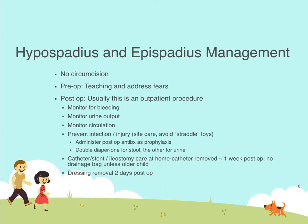Tell parents to avoid putting these children on any toy where they have to straddle — a horse, a bike, a scooter, that type of thing. Catheter, stent, or ostomy care needs to be taught to the parents. The catheter is removed anywhere from one to two weeks post-op. There is no drainage bag for this catheter unless the child is older, in which case we give either a dependent bag or a leg bag. Dressings are removed at two days post-op.